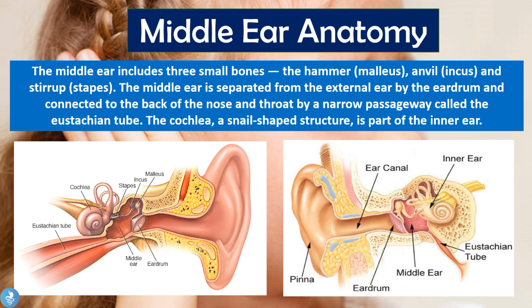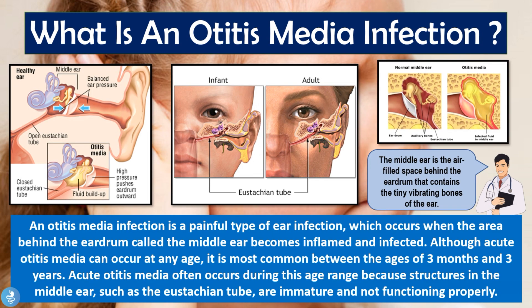Now that we know the basics of the middle ear anatomy, let's take a closer look at what an otitis media infection is. An otitis media infection is a painful type of ear infection which occurs when the area behind the eardrum — called the middle ear — becomes inflamed and infected. Although acute otitis media can occur at any age, it is most common between the ages of three months and three years, because structures in the middle ear such as the eustachian tube are immature and not functioning properly.